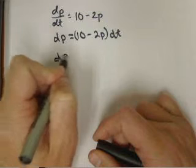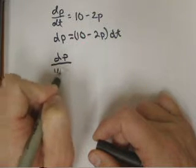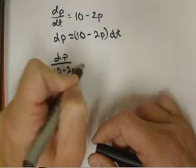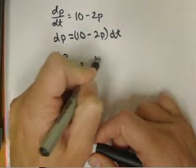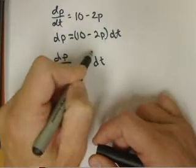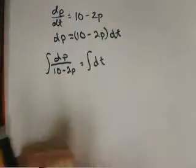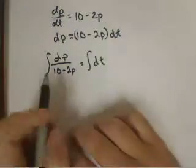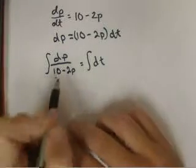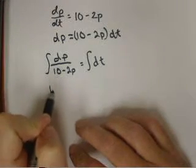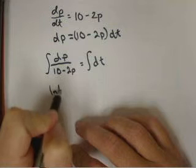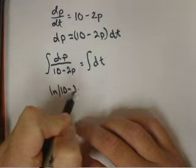So I get dp over 10 minus 2p equals dt, and then I'm going to take the antiderivative of both sides. Now here's where a lot of people make their mistake on this left-hand side. They rush through this because initially you just want to say, okay, well it's natural log of the absolute value of 10 minus 2p.